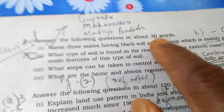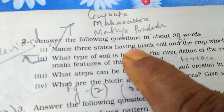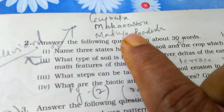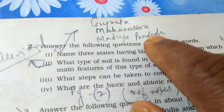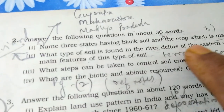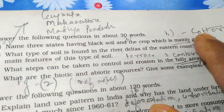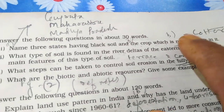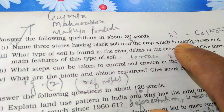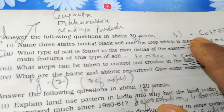Answer the following questions in 30 words. Name three states having black soil. You will write Gujarat, Maharashtra, and Madhya Pradesh. The crop which is mainly grown on it is cotton crop. That is why it is named cotton soil, black cotton soil, or Regur soil.